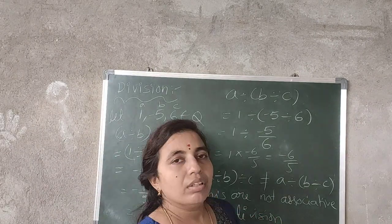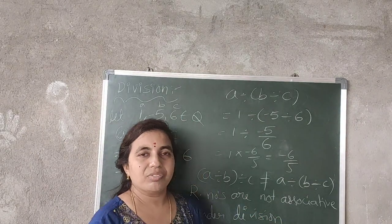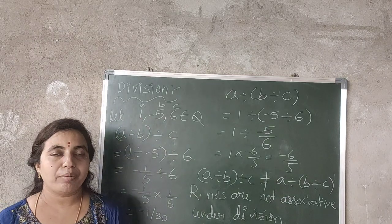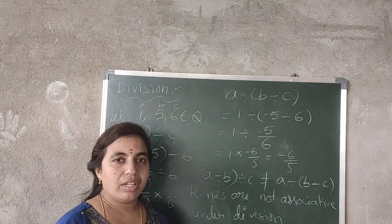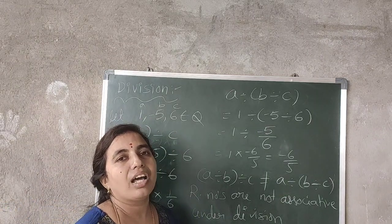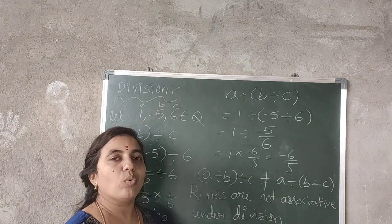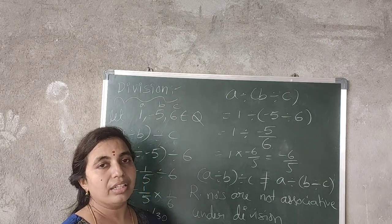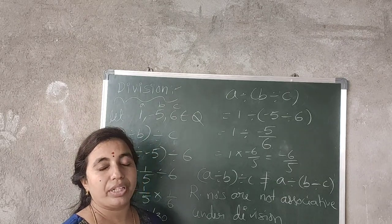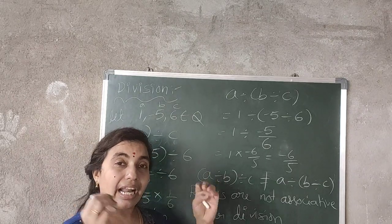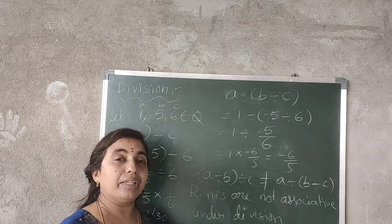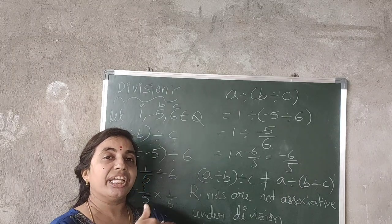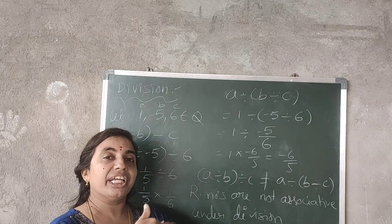From this we observe that rational numbers follow associative property only under addition and multiplication. Under subtraction and division you cannot change the grouping order.